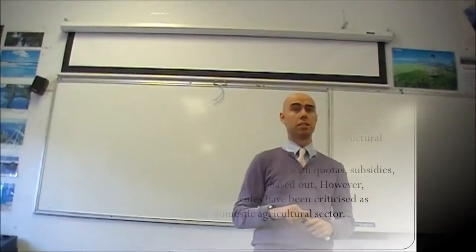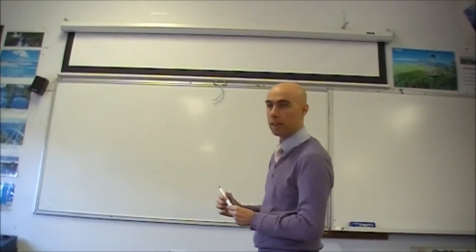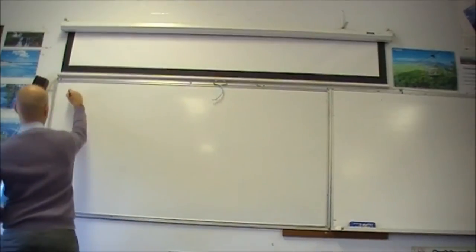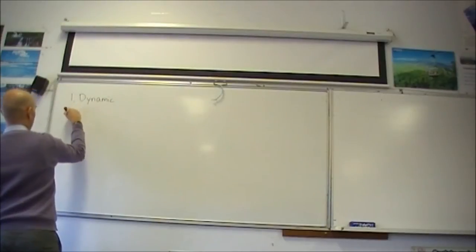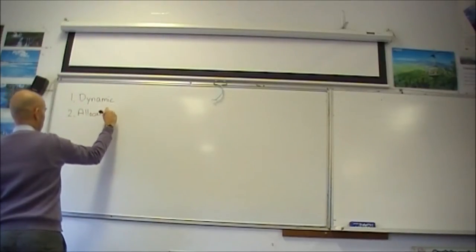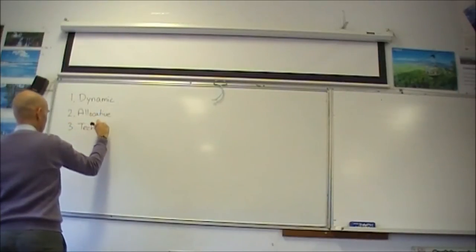And there we're talking about allocative efficiency. Remember, we have three types of efficiencies. Anyone remember what the three types of efficiency were? I'm giving you one there. Very good. So one is dynamic, which you gave me. Two is allocative, which I've written there. And what is the third one? And three is technical. Very good.